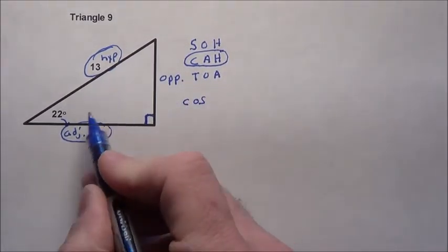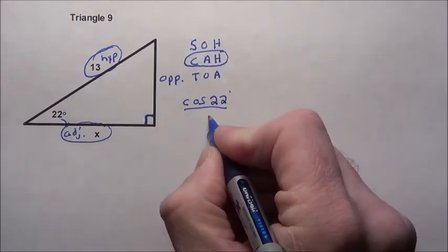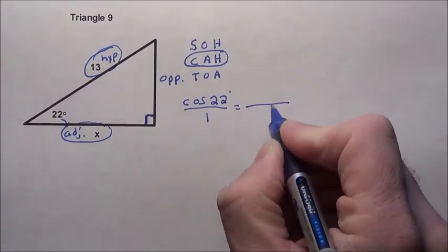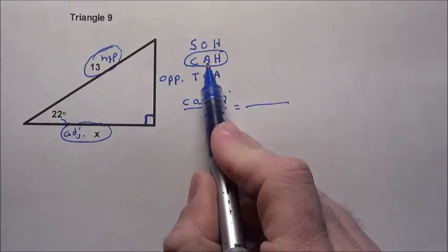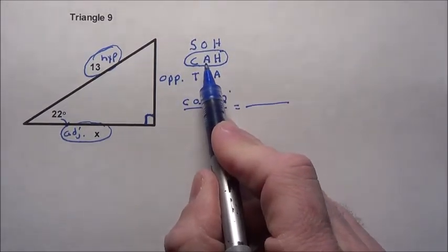So I have cosine of the angle, which in this case is 22 degrees, over 1, equals adjacent over hypotenuse. You can't flip them. Adjacent comes first, so I put the adjacent first.